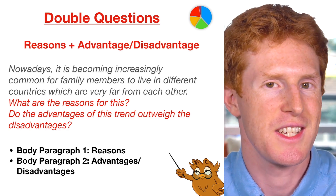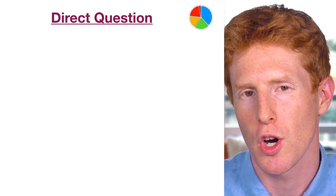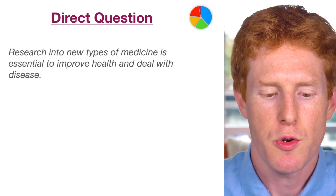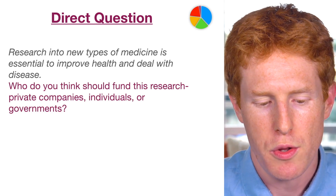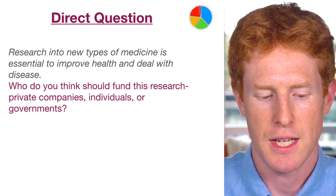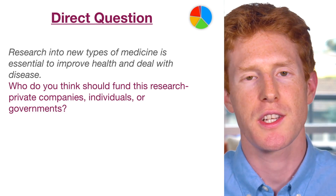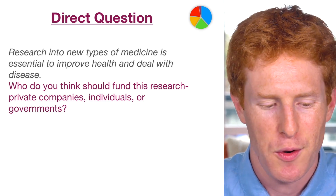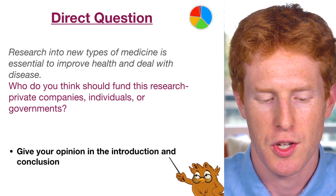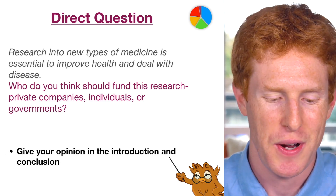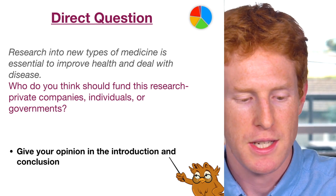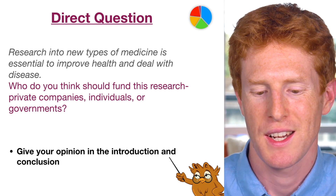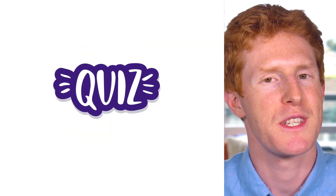The final essay type in IELTS is the direct question, though it's not very common. Here's an example: 'Research into new types of medicine is essential to improve health and deal with disease. Who do you think should fund this research — private companies, individuals, or governments?' We're asked a very explicit direct question. We need to give our opinion in the introduction and conclusion and make sure we answer that specific question. Ideally our answer will also touch on private companies, individuals, and governments.